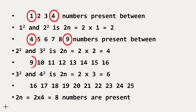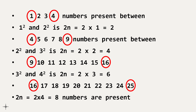Continuing the pattern: between 9 and 16 are 6 non-square numbers, and between 16 and 25, there are 2×4 = 8 non-square numbers. So the general formula is that 2n natural numbers are present between two consecutive square numbers, where n is the smaller square root.